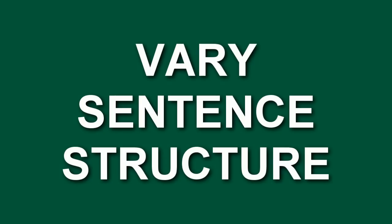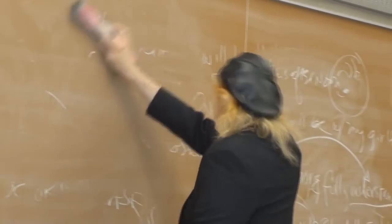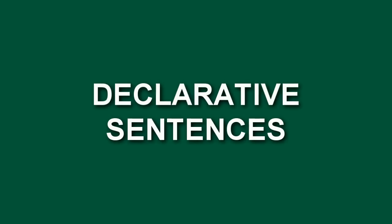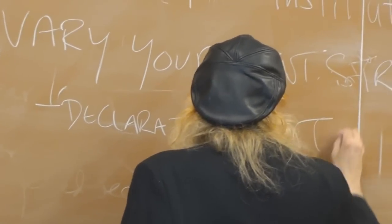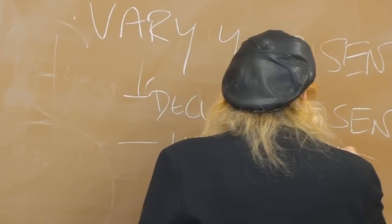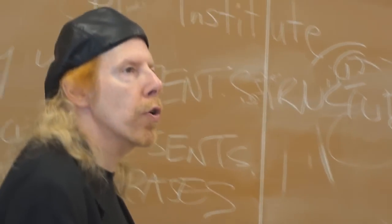You want to vary your sentence structure — this is a really important tip for good writing. How do you do that? You do it by using declarative sentences and sentences with introductory phrases. I showed you a couple of those with 'however,' or 'in order to' instead of just 'to.'